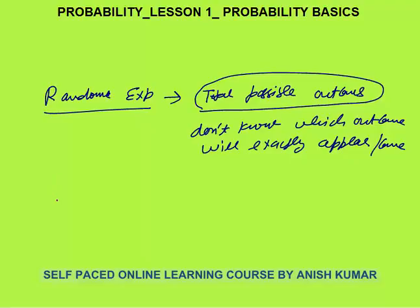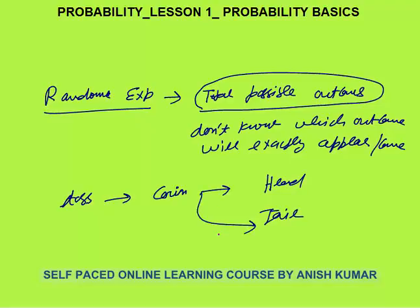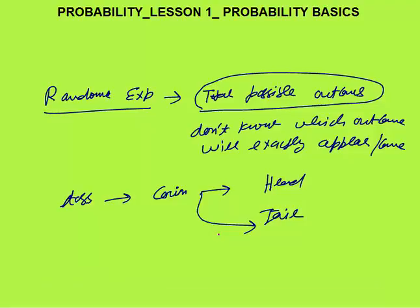For example, you toss a coin. You know the total possible outcomes — either it will be a head or it will be a tail. But you don't know which outcome will come when you toss the coin. So tossing a coin is a random experiment, and in probability we deal only with random experiments.